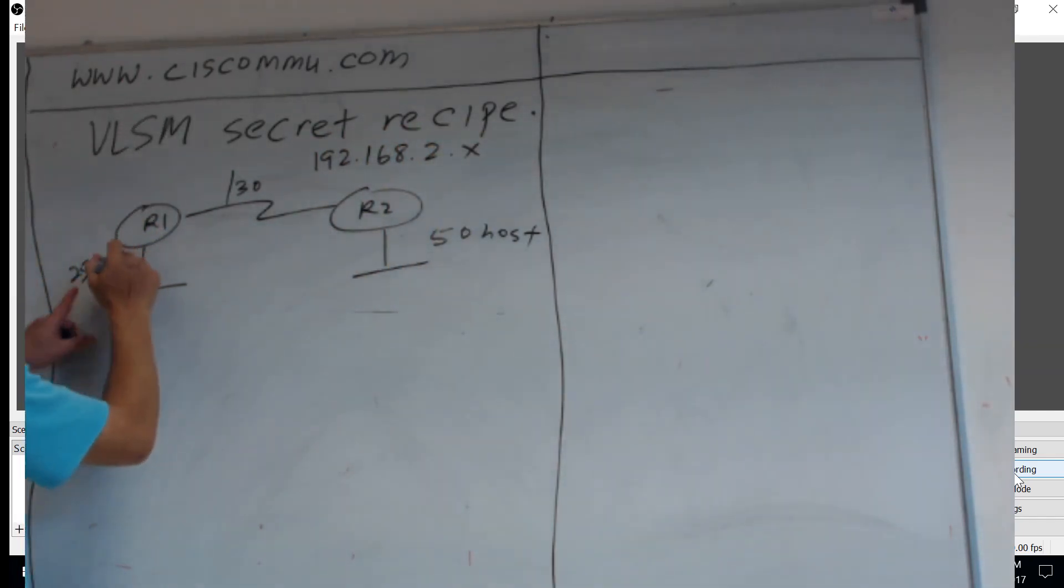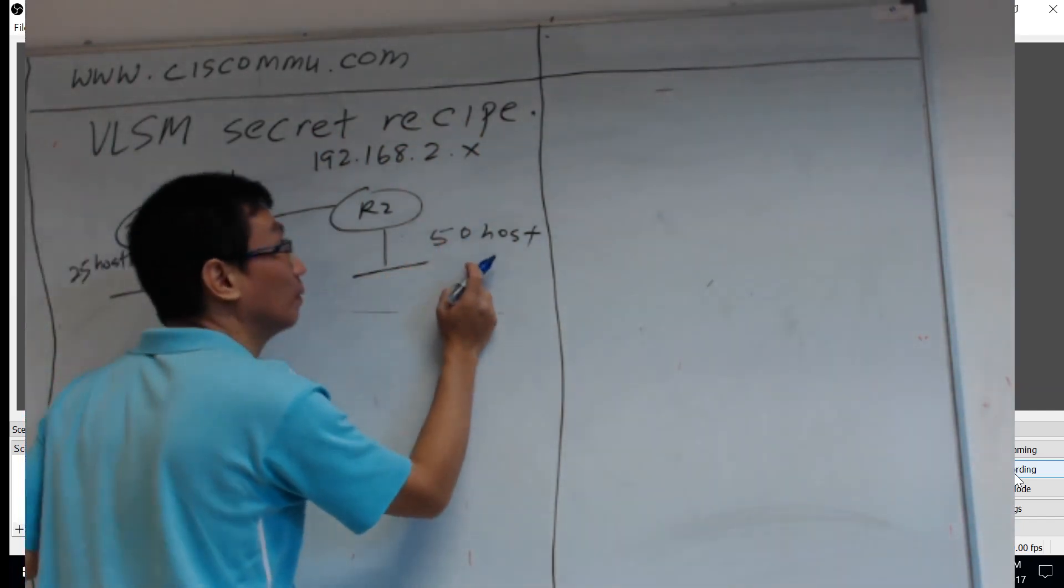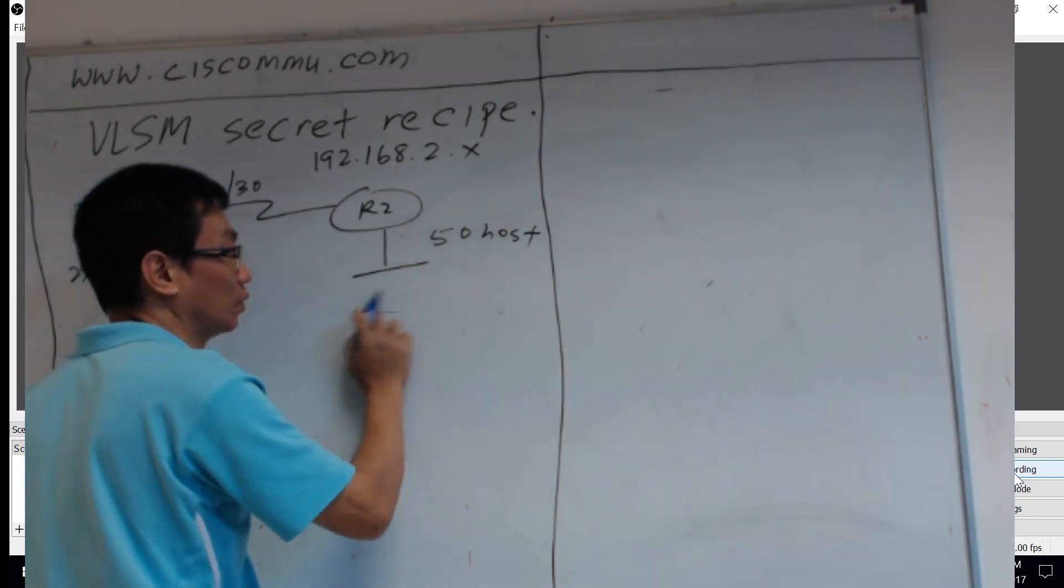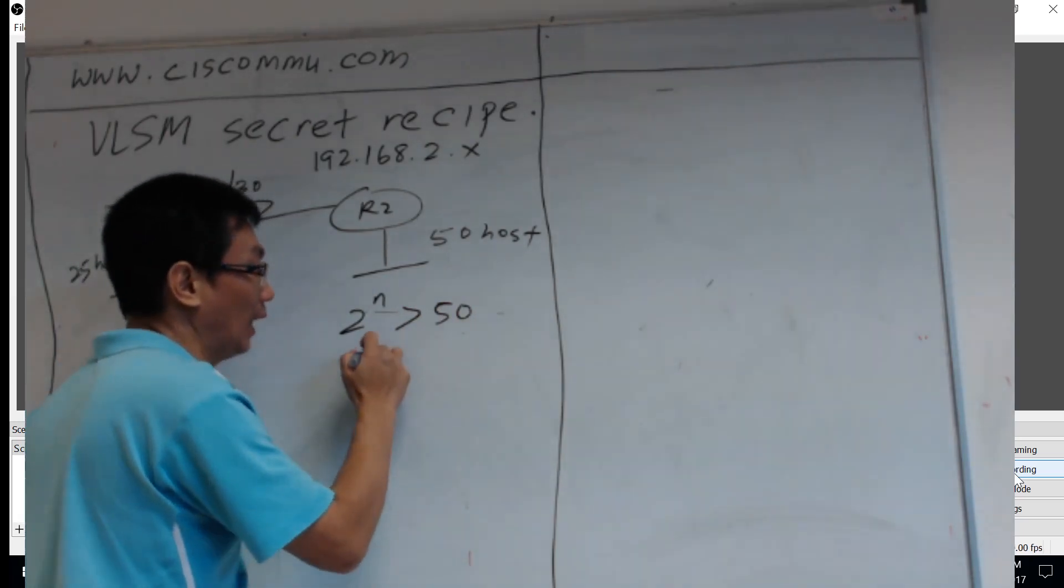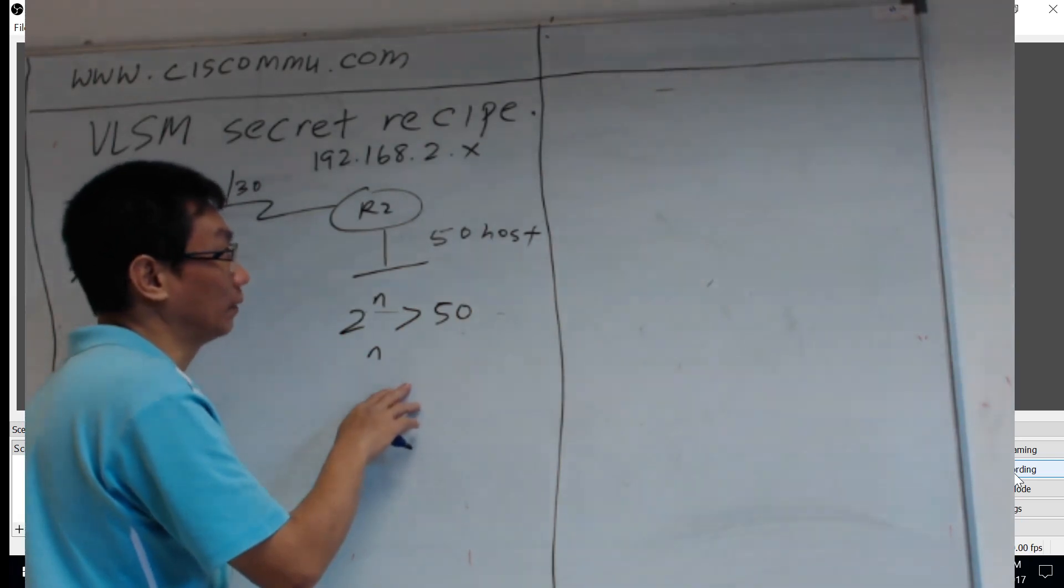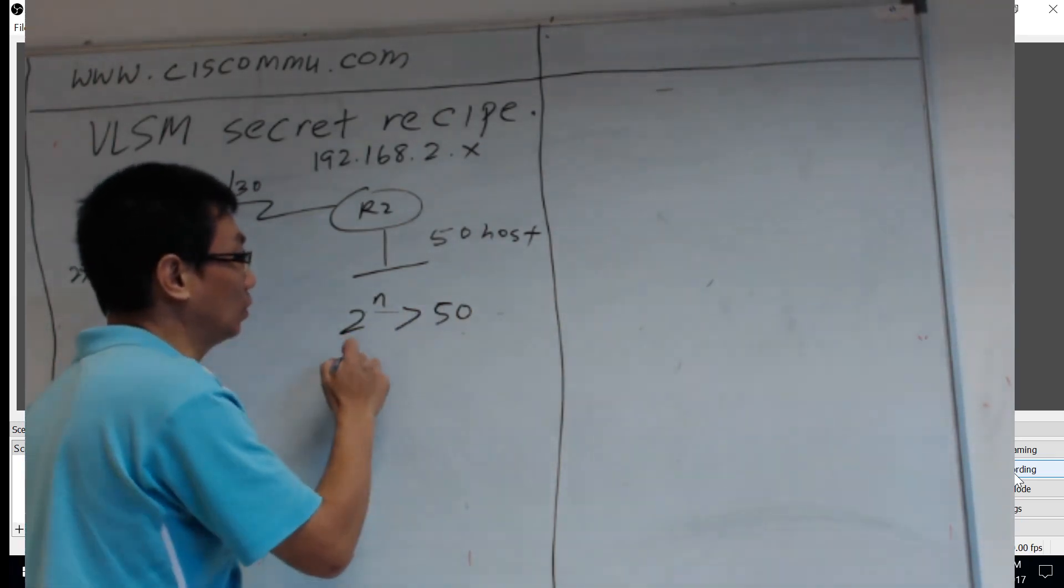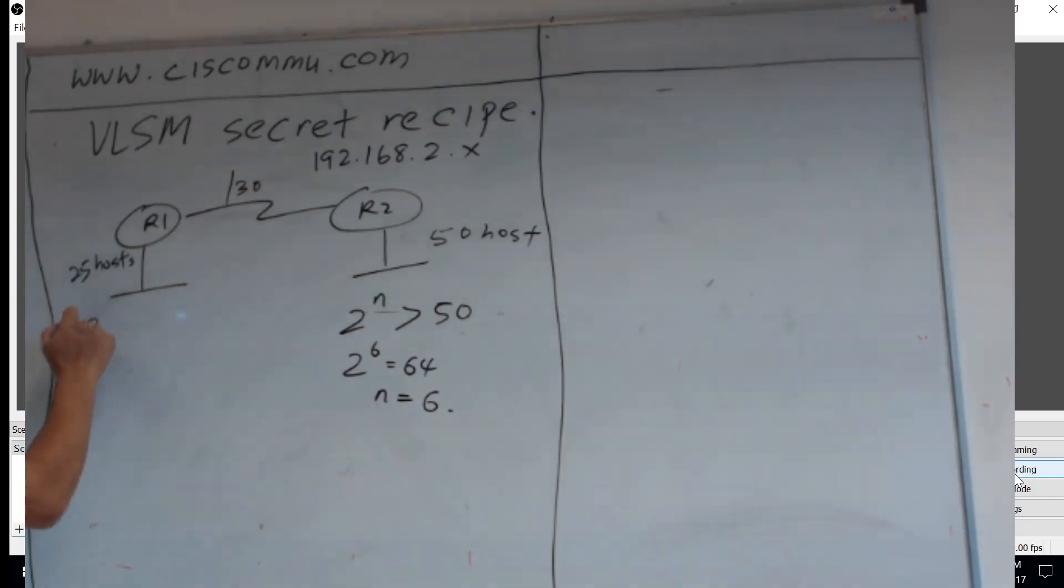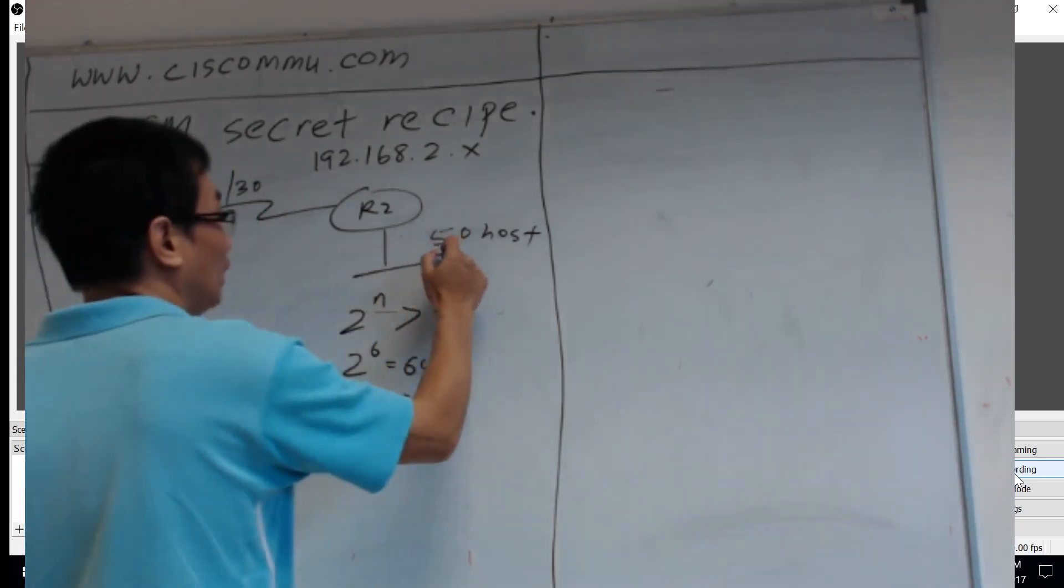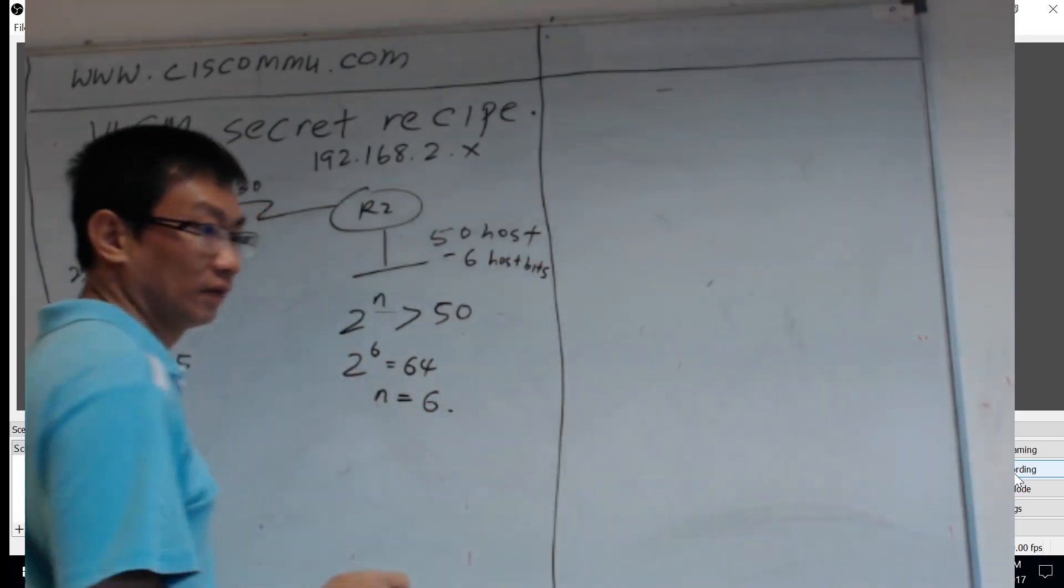So, 25 hosts, how many bits you need? 50 hosts, how many bits you need? 50 hosts, 2 to the power of n must be more than 50. So what is the value of n? 2 to the power of 6 is 64, so n is equal to 6. Here, 2 to the power of n more than 25. 2 to the power of 5 is 32, more than 25, so n is equal to 5. So here, you need 5 bits, and over here, you need 6 bits.